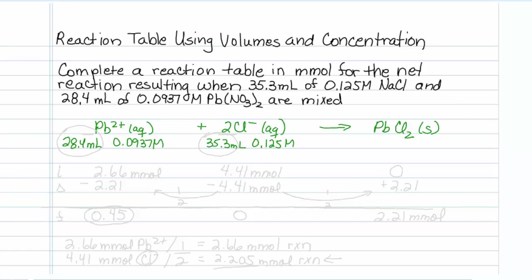Now we'll just multiply these out, and for the lead, initially it looks like I'm going to have 2.66 millimoles. 35.3 times 0.125 will give me 4.41 millimoles of chloride.